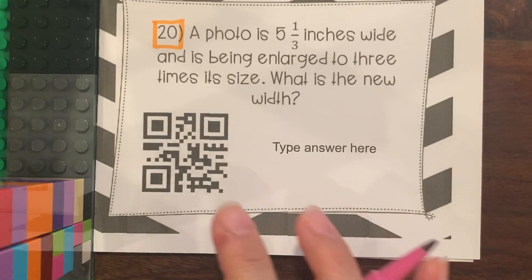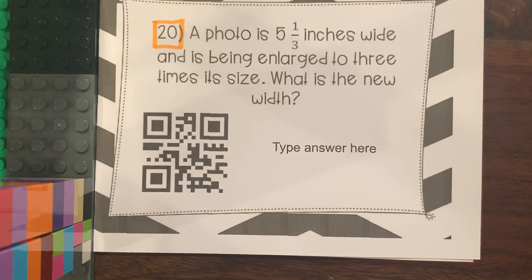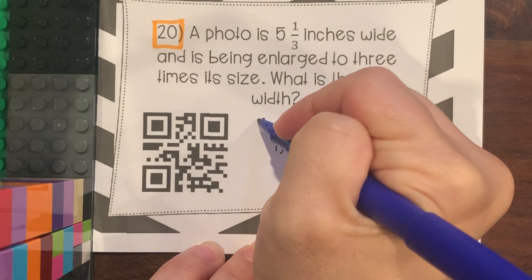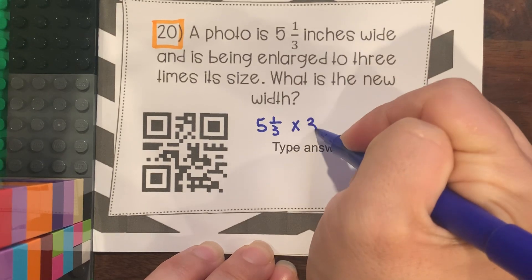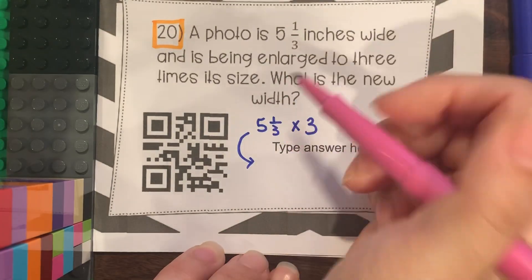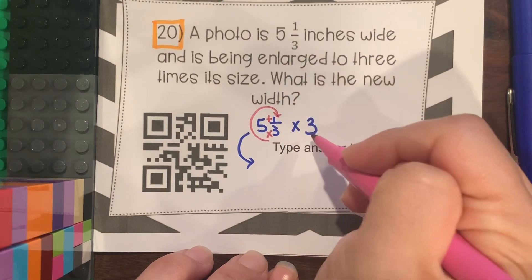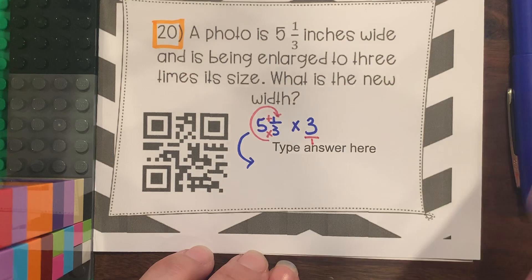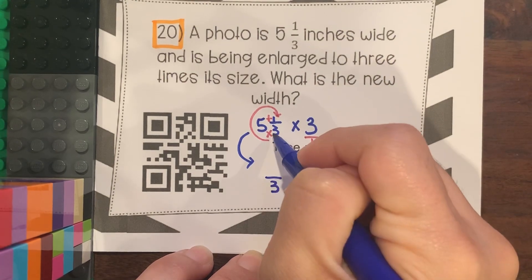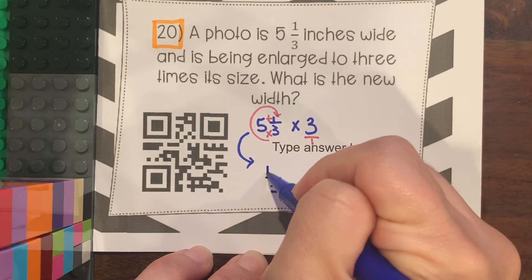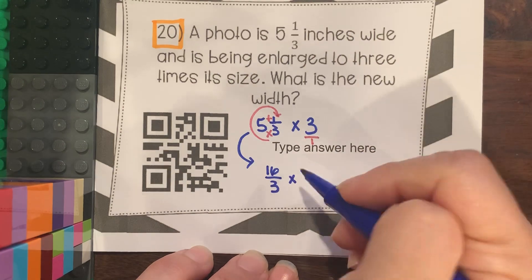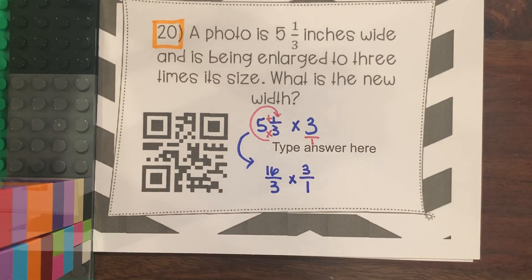Number 20: A photo is 5 and 1/3 inches wide and it's being enlarged — meaning multiplied — 3 times its size. What is the new width? It's a simple setup: take 5 and 1/3 and multiply by 3. But you need to turn the mixed number into an improper fraction using around the world — denominator stays 3, then 3 times 5 is 15 plus 1, so 16/3. And write 3 as 3 over 1, then multiply.